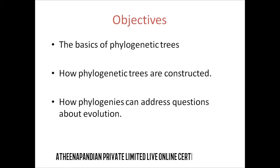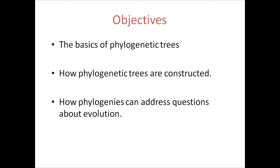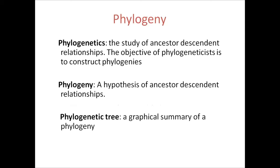Phylogeny is important for understanding the evolution of different species — for example, the evolution of man starting from chimpanzee, as well as reptiles and other organisms. Phylogeny trees are useful for identifying similarities, and we find homology of a particular species whose sequence is blasted and identified through phylogeny tree analysis.